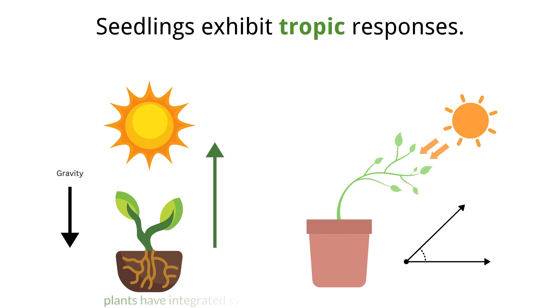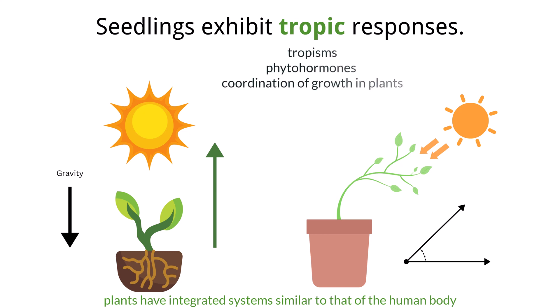Plants also integrate their body systems to coordinate growth, respond to light, and regulate their development. In this video, we'll focus on tropisms, phytohormones, and the coordination of growth in plants.